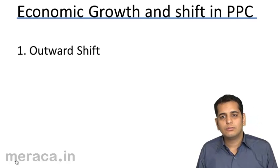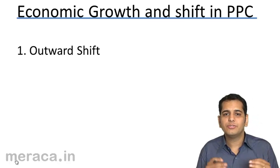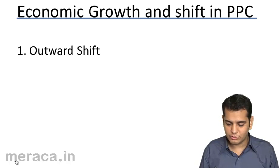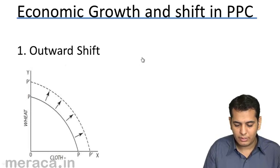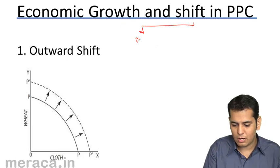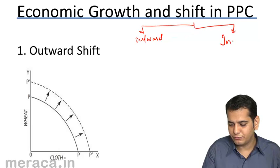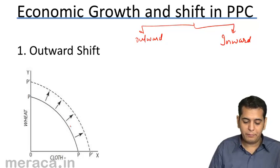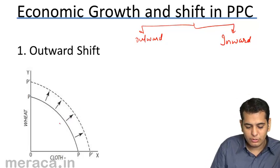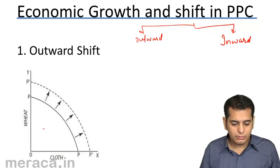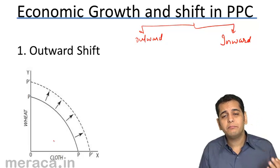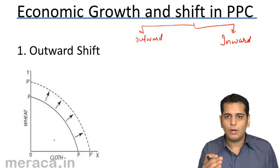There are two ways in which the PPC curve can shift: first is the outward shift, and the other is the inward shift. The PPC can either shift outwards or inwards. Let's see what we mean by the PPC curve shifting outwards.